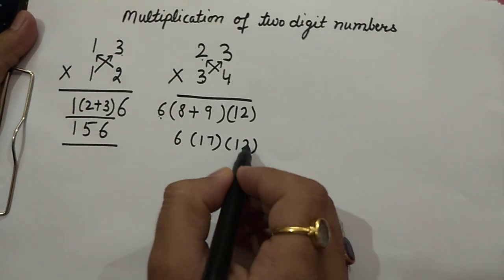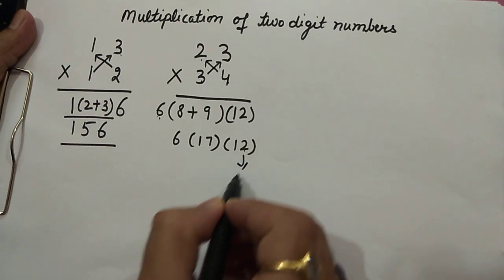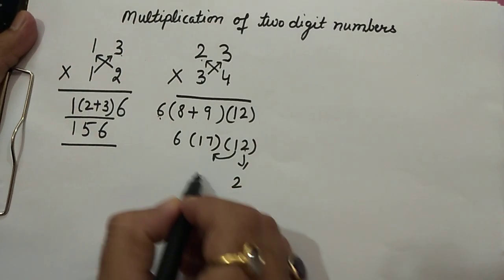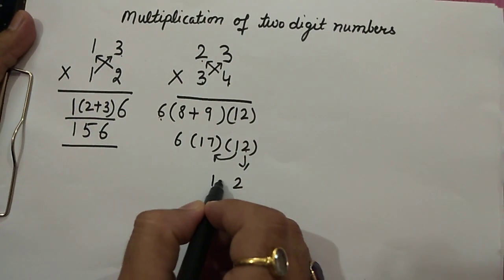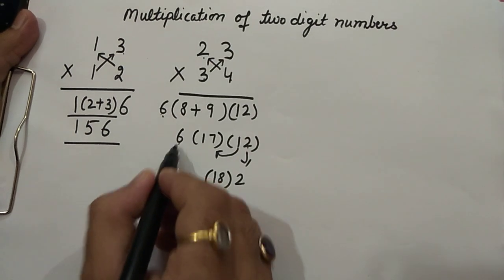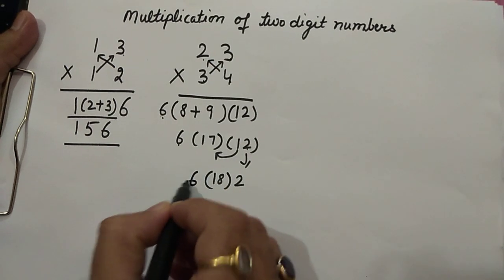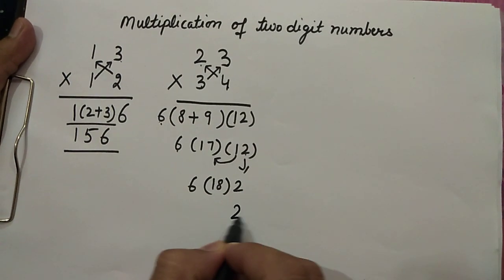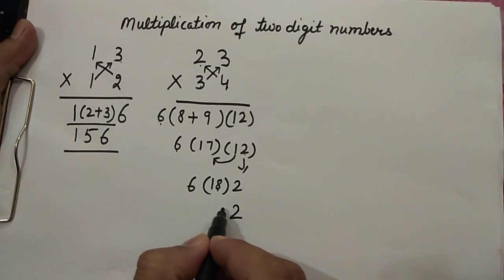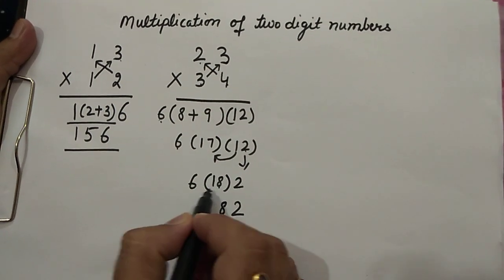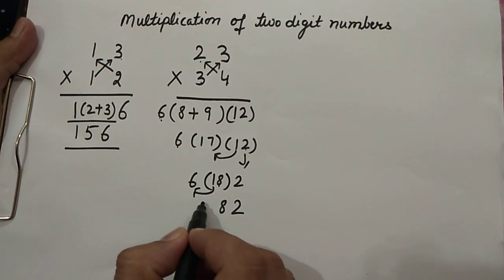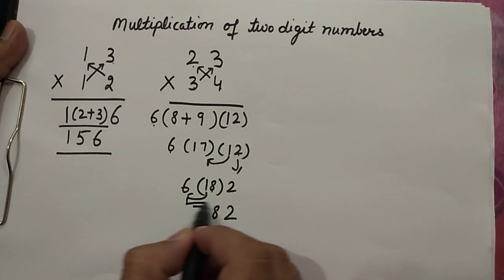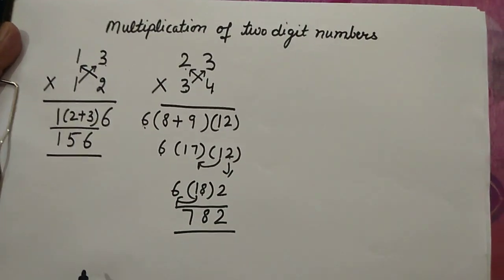So what do we get? Write 2 as it is. The 1 is added to 17, we get 18, then 6 as it is. And in the last step, this 2, then this 8, and this 1 added to 6 we get 7. So finally the answer is 782.